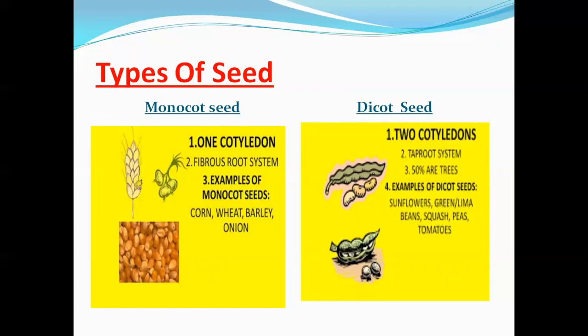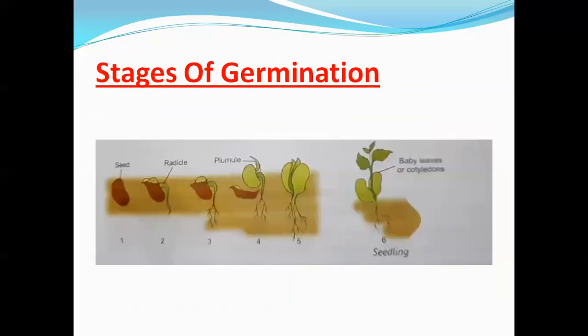Now you can easily differentiate the seeds present at your home. Let's learn the different stages of germination. In the first stage, the seed absorbs water from its surroundings and gets swollen. Then the seed coat breaks open and the root, or radicle, grows downward. Then the shoot, or plumule, starts growing upwards, which later produces the stem and leaves. Finally, when the seedling grows green leaves, it starts making its own food by the process of photosynthesis. Then the cotyledons dry and fall from the plant.